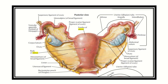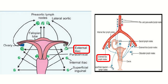Now let's look at the lymph nodes. Here we can see the deep nodes in different parts and how they drain the lymphatics from the uterus. From the fundus, we can see the lymph initially drains into the pre-aortic lymph nodes. So the fundus and also the fallopian tube drain into the pre-aortic lymph nodes.